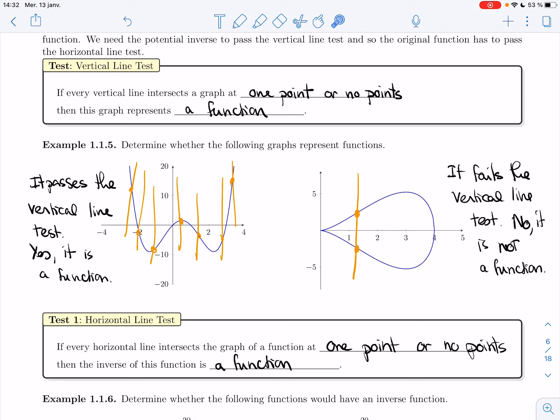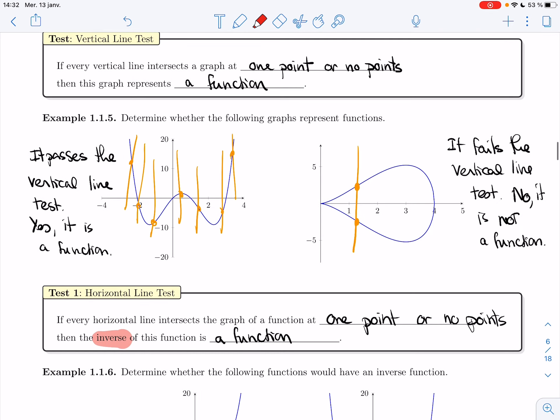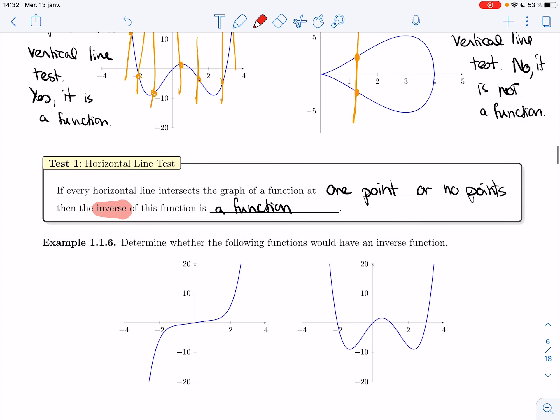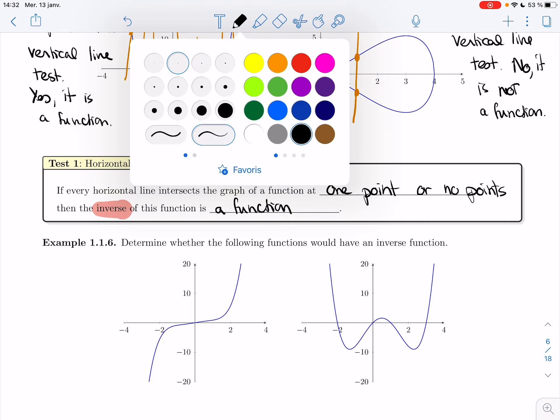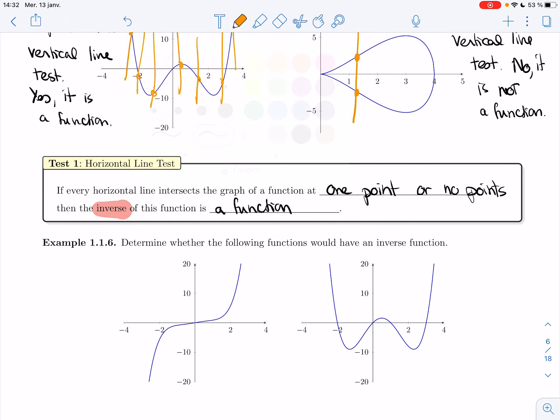So it would have a nice inverse. Let's try it on example 1.1.6. Determine whether the following functions would have an inverse function. So I'm going to look at horizontal lines now. And I want to make sure that each horizontal line either doesn't intersect the graph at all or intersects it at a single point.